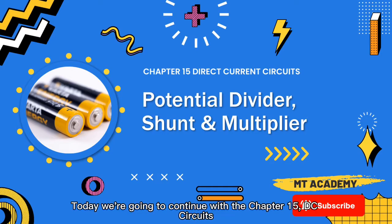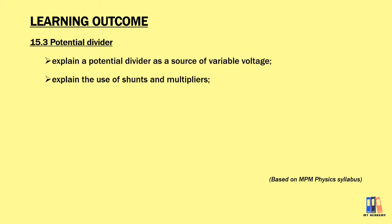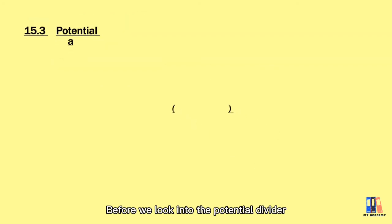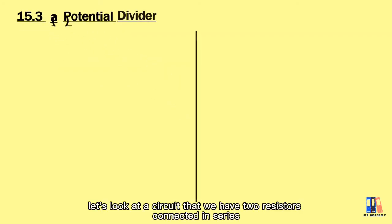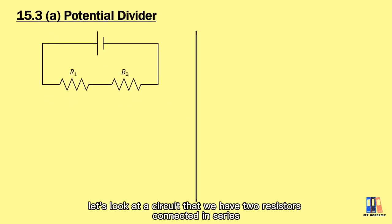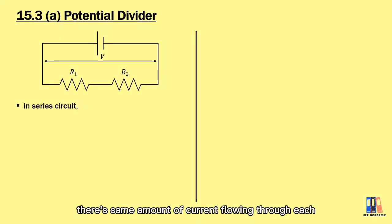Today we're going to continue with Chapter 15 DC circuits, where we're going to talk about potential divider, shunt, and multiplier. Before we look into the potential divider, let's look at a circuit that has two resistors connected in series. In a series circuit, the same amount of current flows through each of the components.